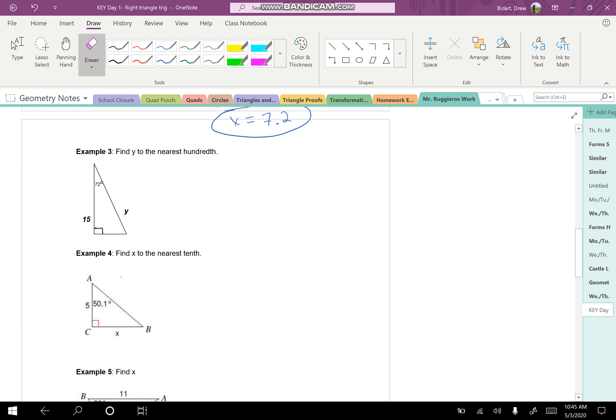This one says find y to the nearest hundredth. So in order to do that, I'm going to identify the angle that is going to be my reference point. From respect to the 72, the y is going to be our hypotenuse, and the 15 is going to be adjacent to that.